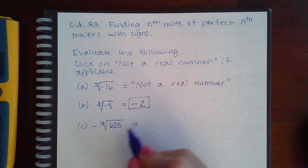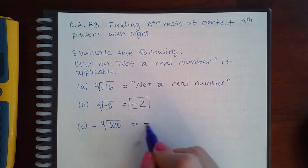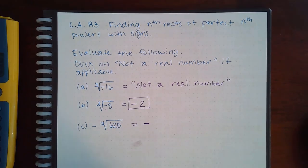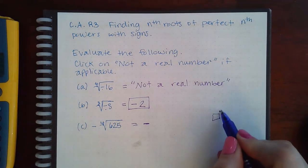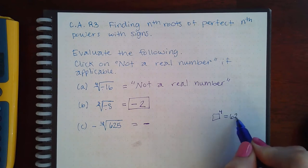Here the negative is not part of the radical, so I'm just going to bring it over. Now I'm asking myself, this is a fourth power, so what number raised to the fourth power gives you 625?